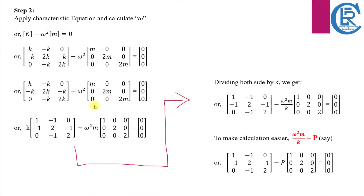Now that we have our mass and stiffness matrices, let's apply the characteristic equation to calculate the natural frequencies. Plug in the mass and stiffness matrices into the characteristic equation and simplify by factoring out common terms. In our problem, we take k common from the stiffness matrix and m from the mass matrix, then divide by the product factor of the stiffness matrix and denote the product factor of the mass matrix by p.